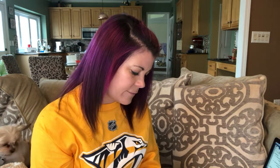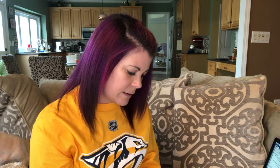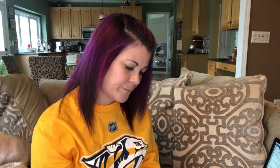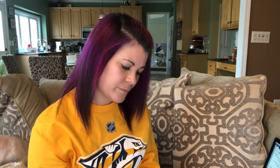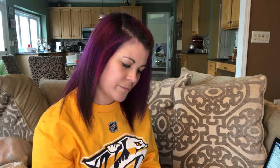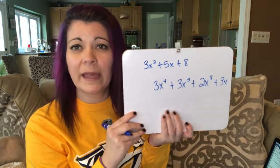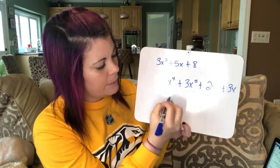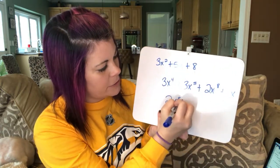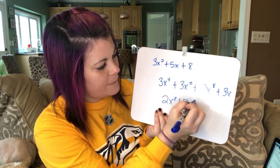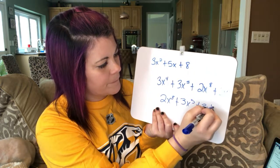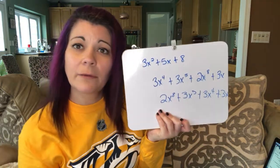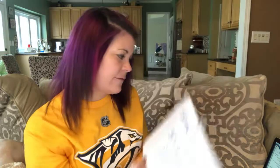Something not written in standard form might look like this. But we can write it in standard form — if we look at the exponents 4, 5, 8, and 1, we would need to write the 8 first, then the 5, then the 4, and then the 1. And that's how you would write it in standard form — in decreasing value.